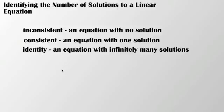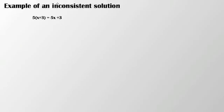What we're going to do now is take a look at the different types of examples. First, let's take a look at an example of an inconsistent solution. What we're going to go ahead and do is solve for x. I'm going to use the distributive property here, and that leaves me with 5x plus 15 equals 5x plus 3.